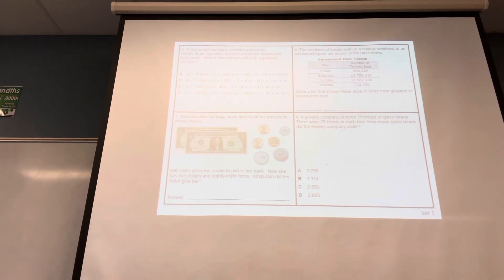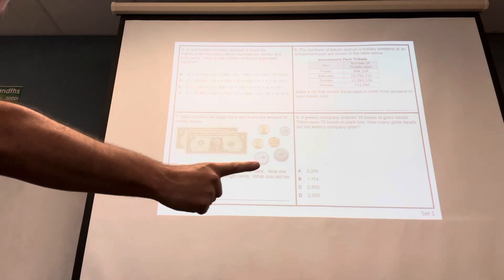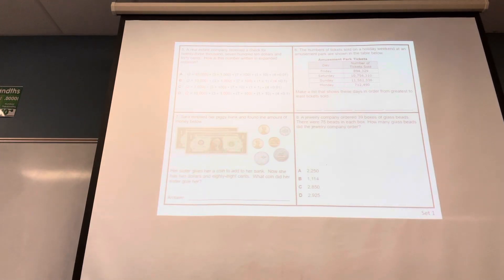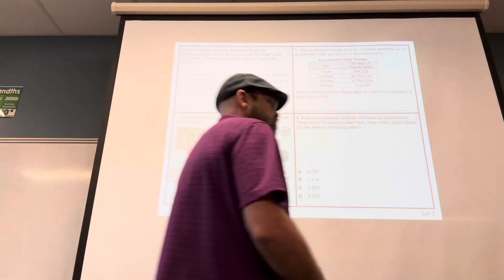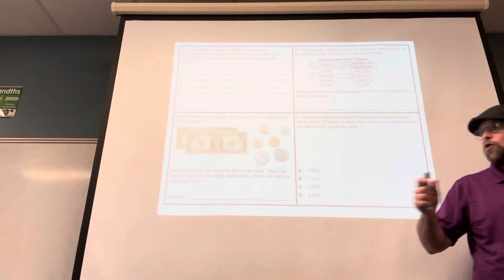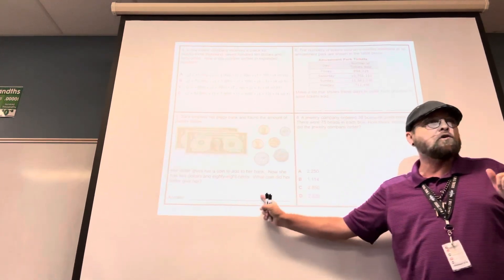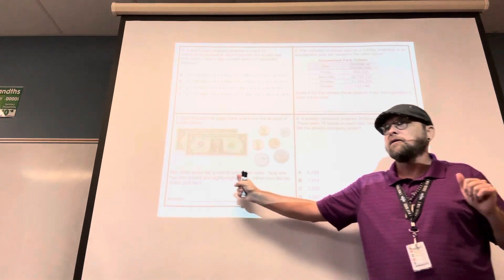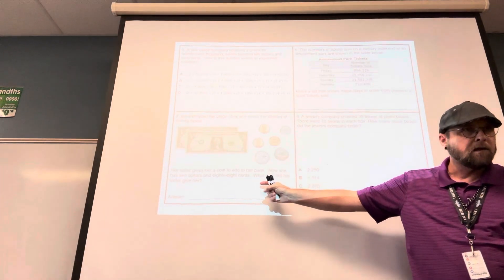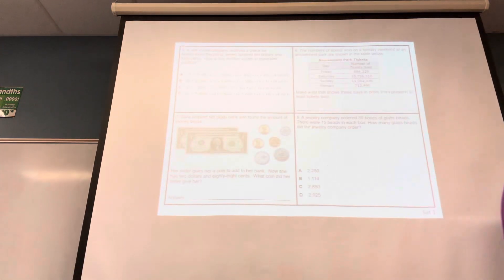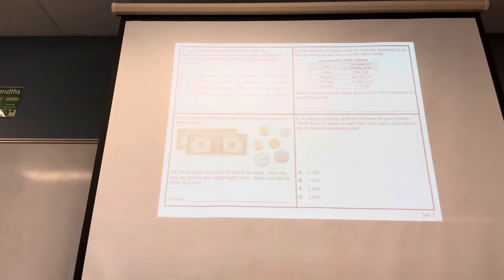Sarah emptied her piggy bank and found the amount of money below. Her sister gives her a coin, so that means one coin to add to her bank. Now she has $2.88. What coin did her sister give her? So if you've got a numerical answer here, you didn't read the question completely. The question says, what coin did her sister give her?